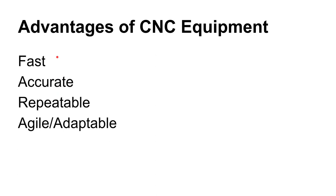Earlier in the semester we saw screw machines from around 1905–1910 that operated pretty fast. They were also accurate and repeatable. What is truly revolutionary about CNC is its agility and adaptability. To program a screw machine you had to machine cams; to reprogram a CNC machine it just takes changing a digit in a program. You can run one part geometry and the very next part can be completely different.